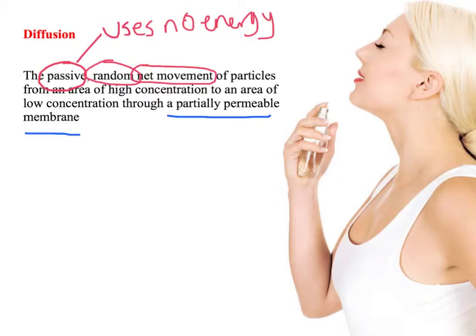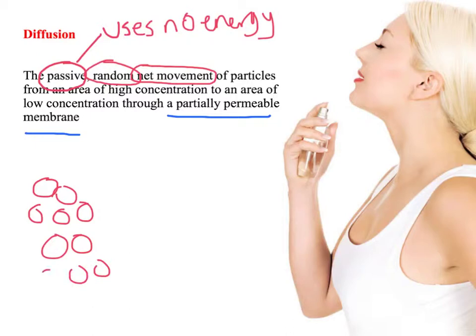What I want to do is just do a very quick sketch to illustrate this point. Let's imagine we have ten random gas particles over on this left side, and on the right hand side we have nothing.